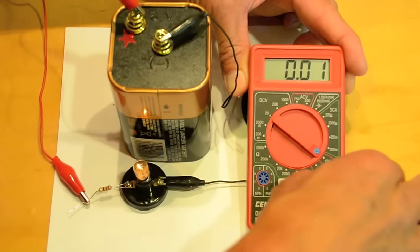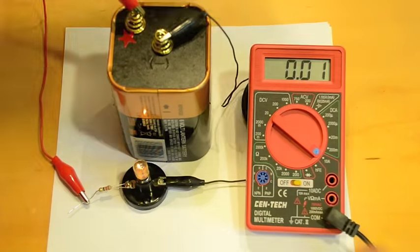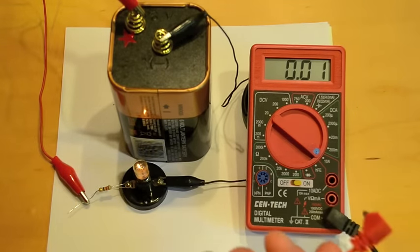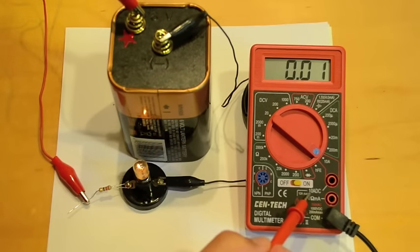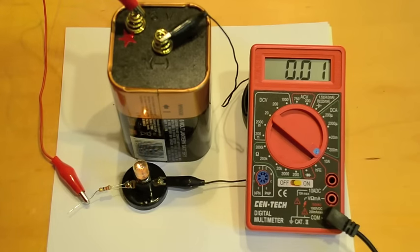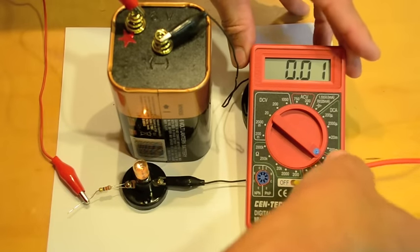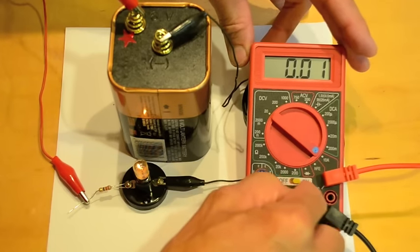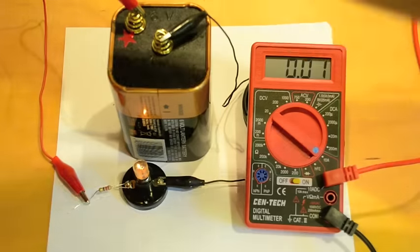Now the probe leads have to be connected very differently for this measurement than we saw in the voltage measurement. First of all the red lead has to be plugged into the socket that says 10 ADC, 10 amps direct current. You can see that they're kind of connected by these little arrows. And now our meter is configured correctly to measure current.